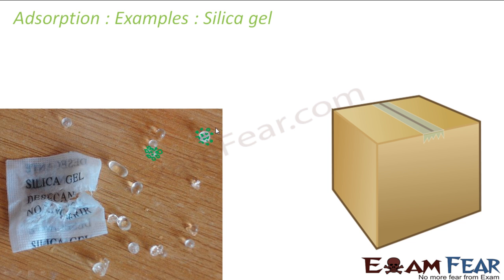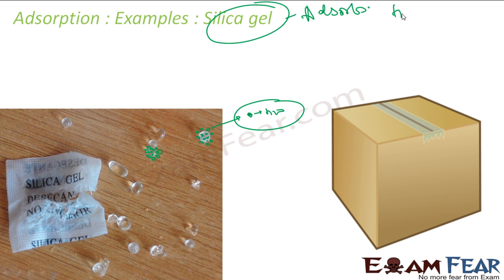Silica gel adsorbs water molecules — it has a very good tendency to adsorb water on its surface. It is generally used for packing electronic gadgets. When you buy a costly item, you often find a silica gel packet in the box. The silica gel adsorbs water molecules from the environment, since the environment has moisture. All the water molecules inside the box get adsorbed by the silica gel, making the box dry.